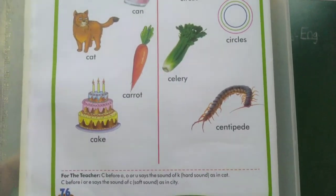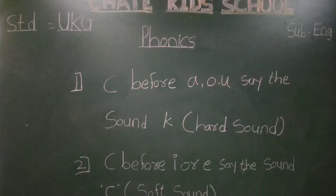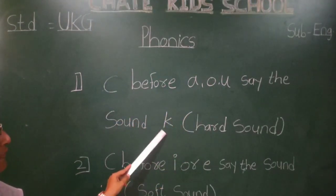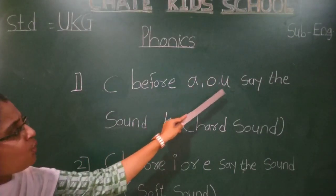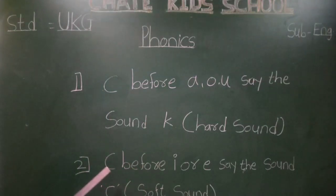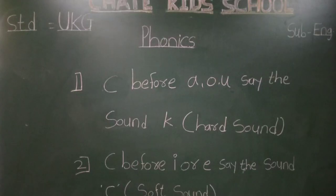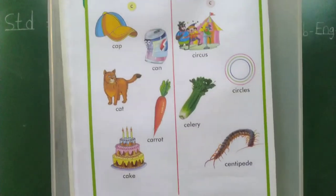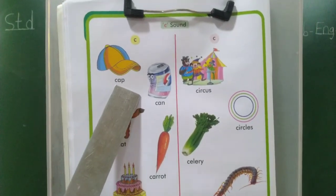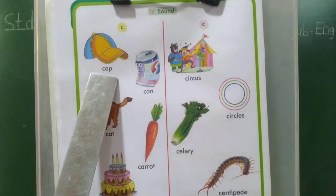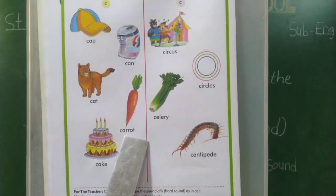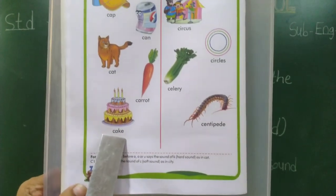Next page, page number 76. C sound. C before A, O, U says the sound K. C before I or E says the S sound. Examples: C-A-R-R-O-T — carrot, C-A-K-E — cake.